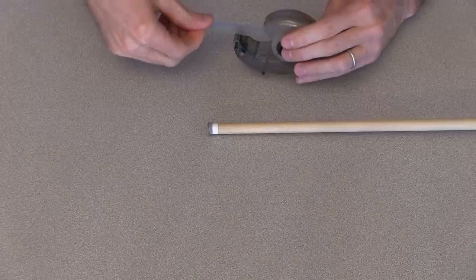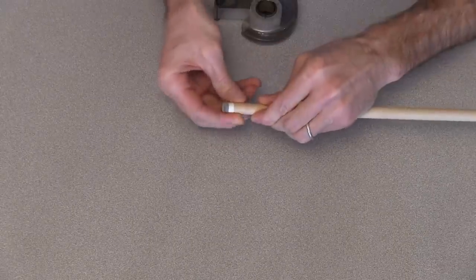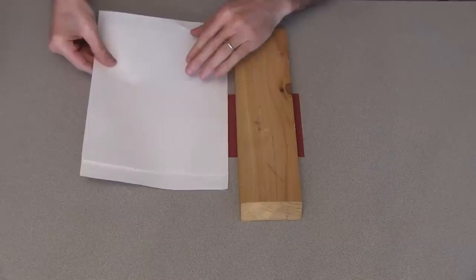The next step is to sand the tip down to the final diameter. First apply a layer of tape to the ferrule. Now put down a sheet of rough sandpaper and place the block over half.